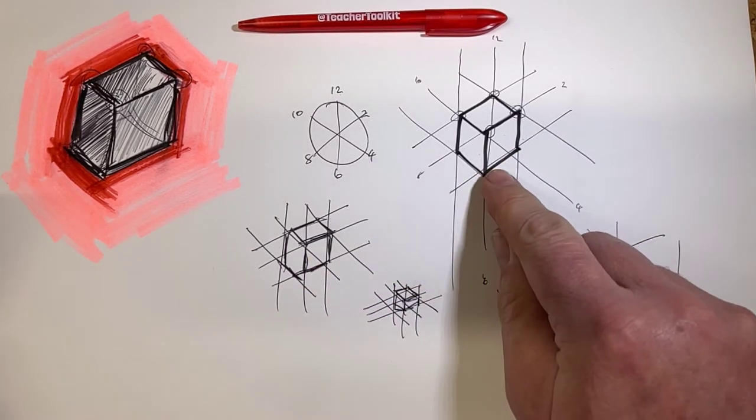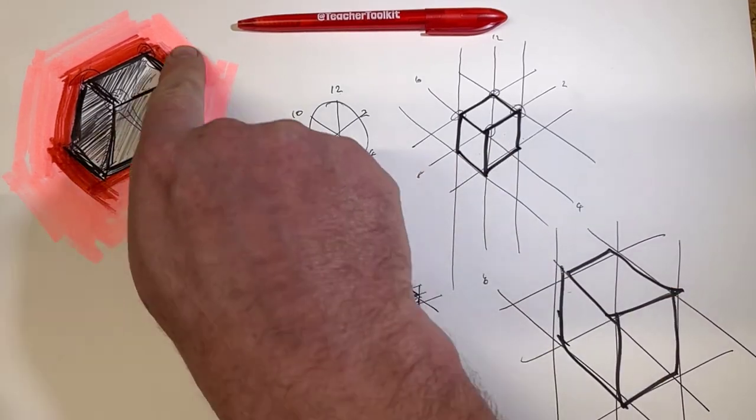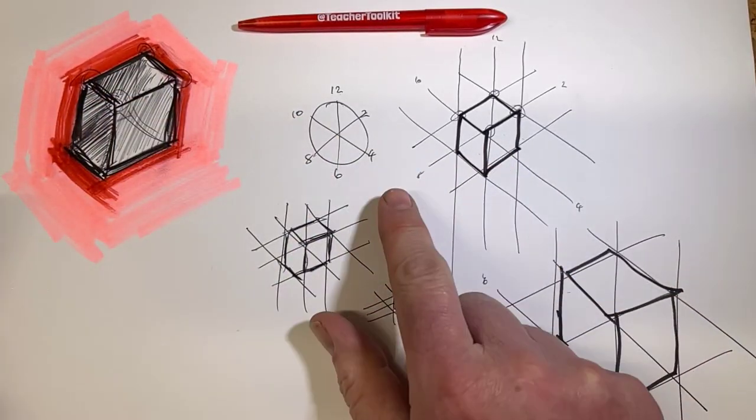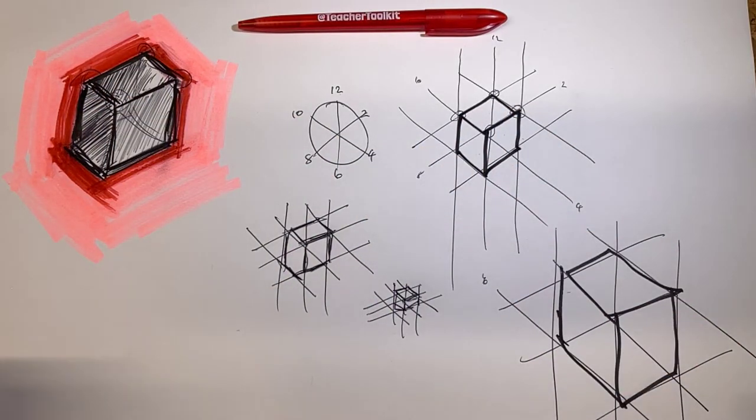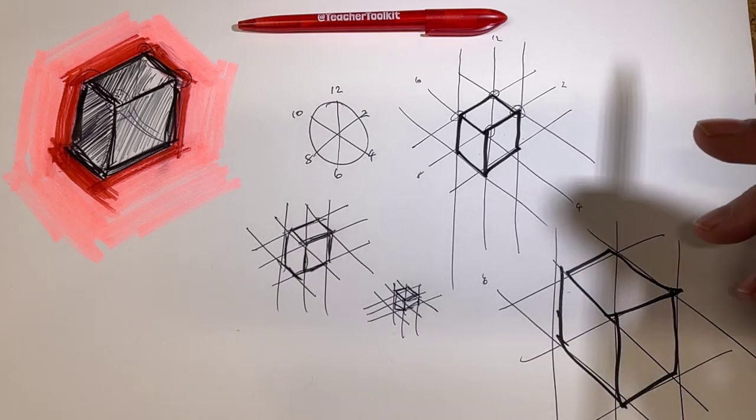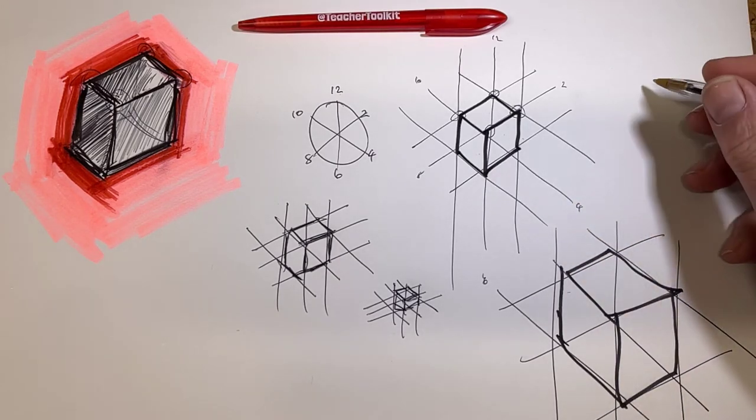So, we return to our first attempt, and we want to move to this stage. Ideally, I want to be able to try and do this without the guidelines, so that's going to take some time. We might want to use a pencil, we can rub the guidelines out.